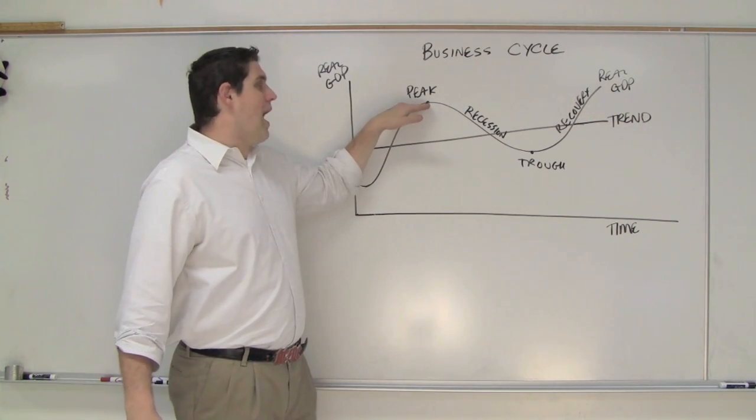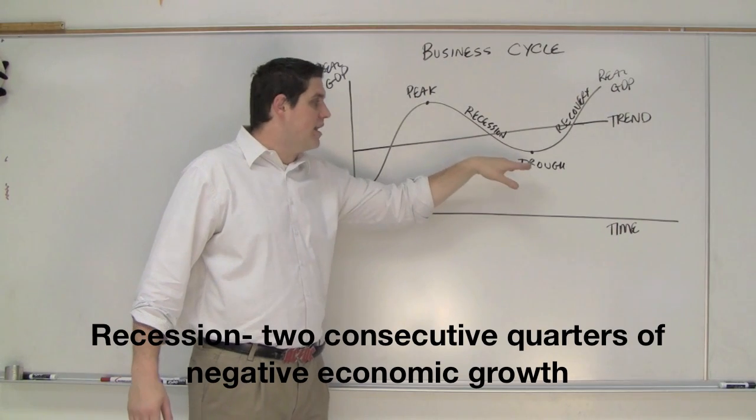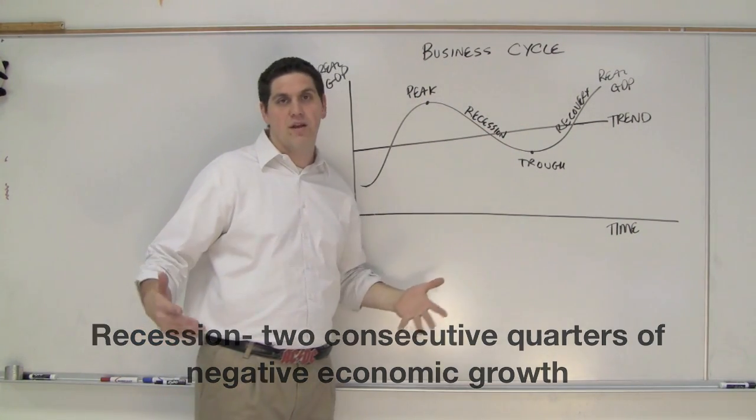Real GDP - the economy is doing really high, so it's a peak. When it starts to fall, that leads to a recession and a trough. And then you get a recovery, the economy starts speeding up again. There it is.